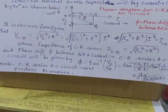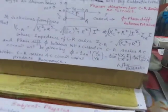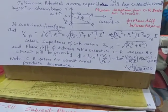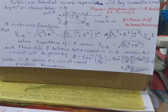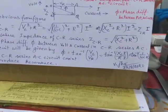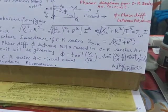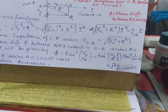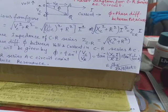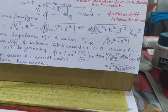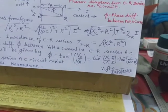and the phase difference between the applied potential difference across the CR circuit and the current flowing through the CR circuit is given by phi equals tan inverse VC upon VR, where VC is XCI, and VR is RI. That becomes tan inverse 1 upon omega CR.